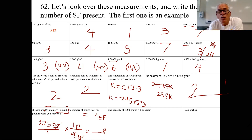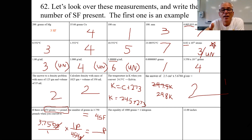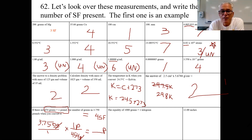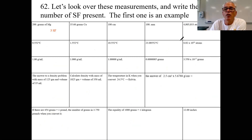1000 grams equals a kilogram — 1000 of anything is a kilo of anything. A thousand meters is a kilometer. This inequality has unlimited significant figures. The last measurement has four significant figures.